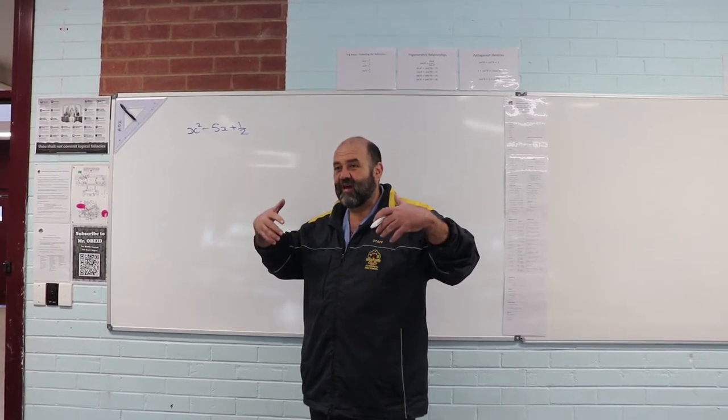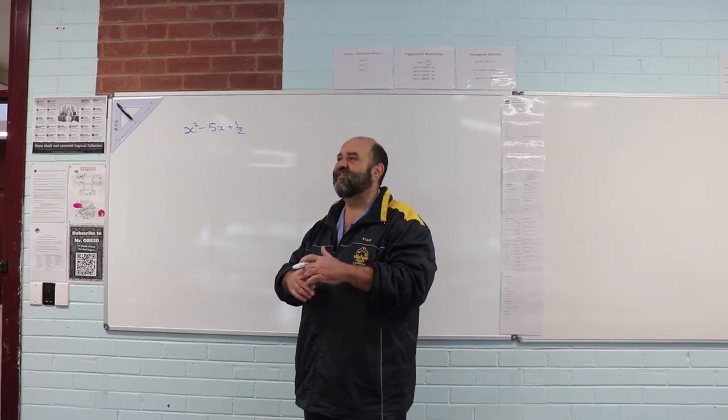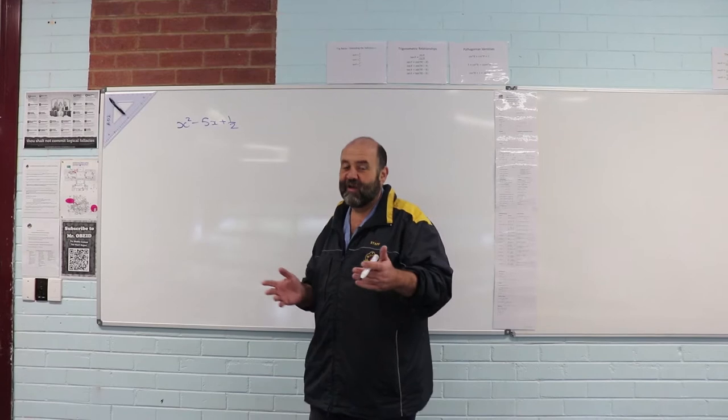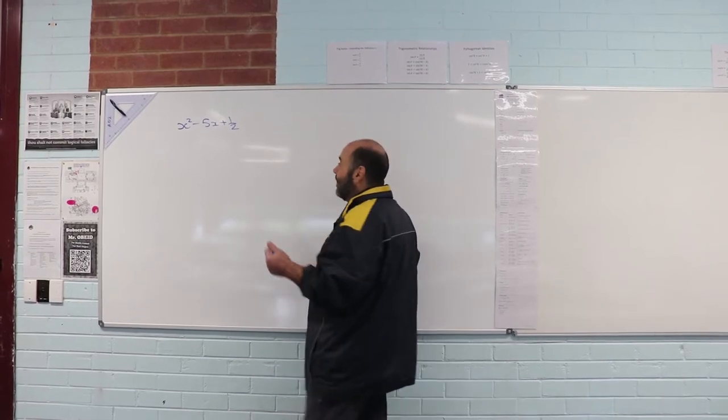So let's have a look. The method that I explained in class is exactly the method that we follow. Half, then square, and subtract the square, and you do the little shimmy dance if you want as you go.